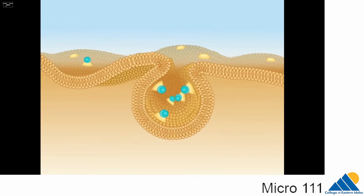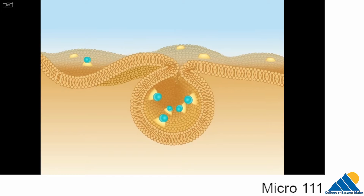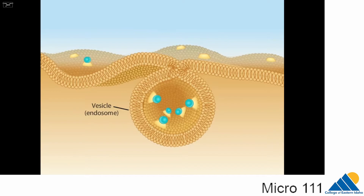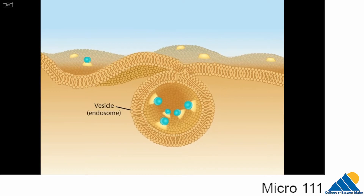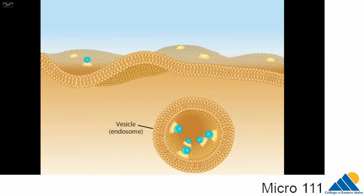The pocket closes in to form a small hollow sphere called an endocytic vesicle or endosome. The membrane lipids rearrange, allowing the endosome to separate from the original membrane. The particles enclosed by the endosome are now trapped within the cell.